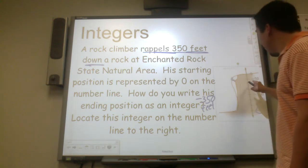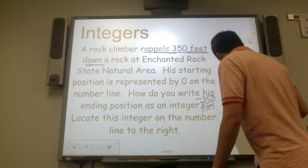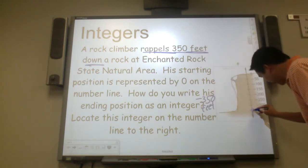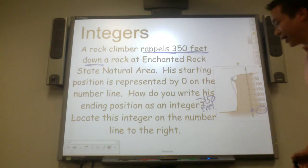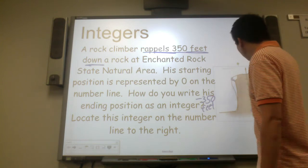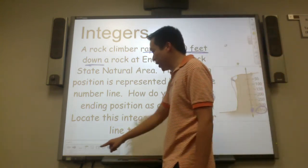Locate this integer on the number line to the right. And that's how you locate negative 350 on the vertical number line. Let's go to the next slide.